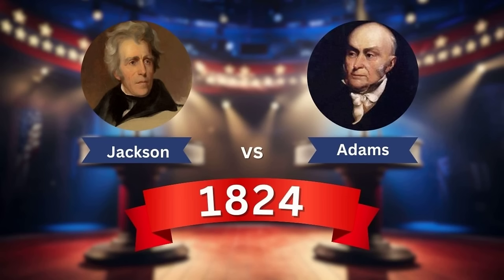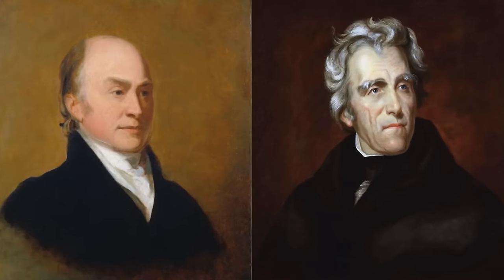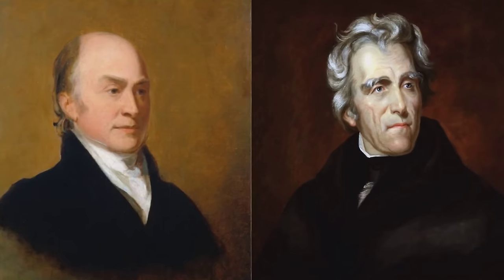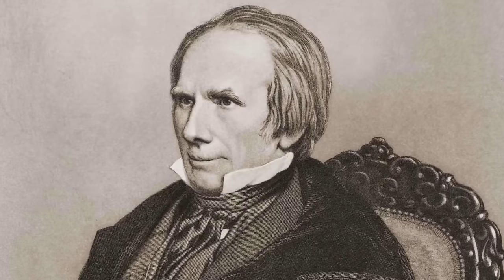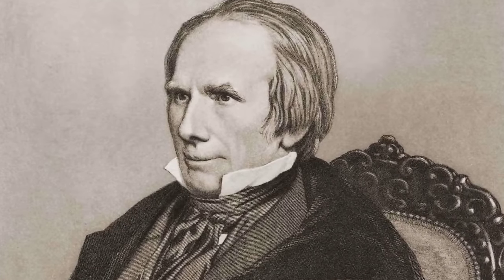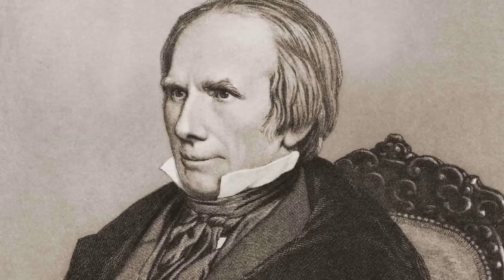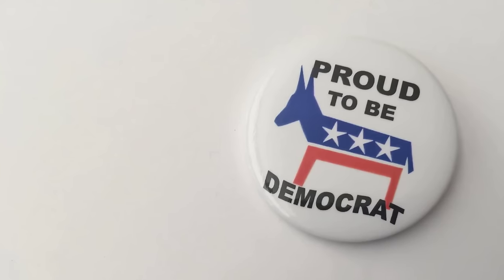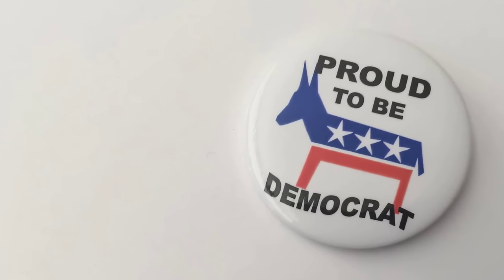1824: Andrew Jackson vs. John Quincy Adams. In 1824, none of the candidates secured a majority in the Electoral College, throwing the election to the House of Representatives. Andrew Jackson had won the popular and electoral vote, but lost to John Quincy Adams after an alleged corrupt bargain with Henry Clay. This election sparked widespread political change, leading to the rise of the Democratic Party.